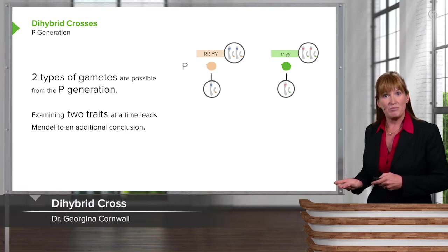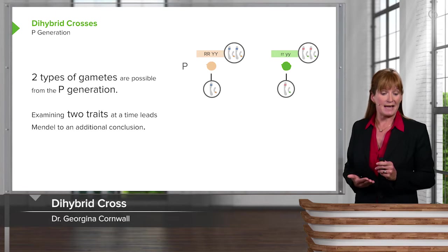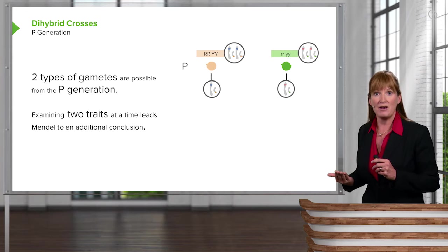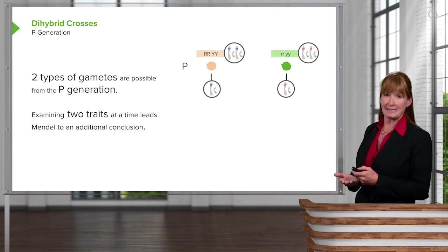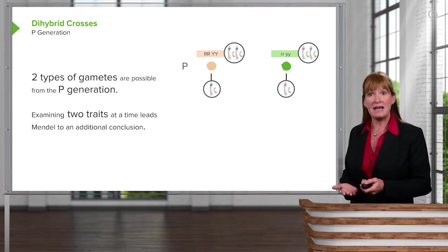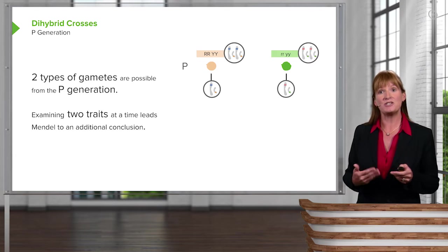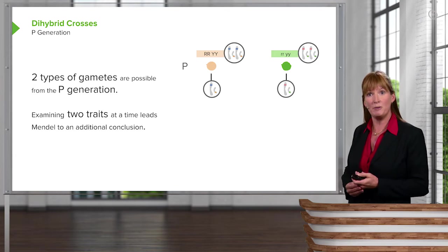Mendel also worked by looking at two traits at a time, not only monohybrid crosses, but to make things a little bit more complicated, dihybrid crosses, observing two characters at once. And there was a purpose for this.